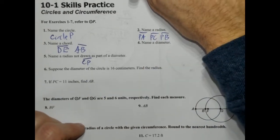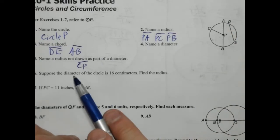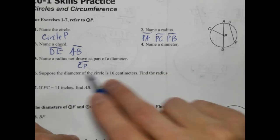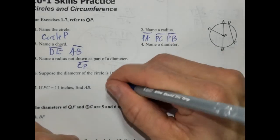Okay. Suppose, let me zoom in a little bit so you can see this better. Suppose the diameter of the circle is 16 centimeters. Find the radius. So if the diameter is 16, the radius is half of that, so it would be 8 centimeters.